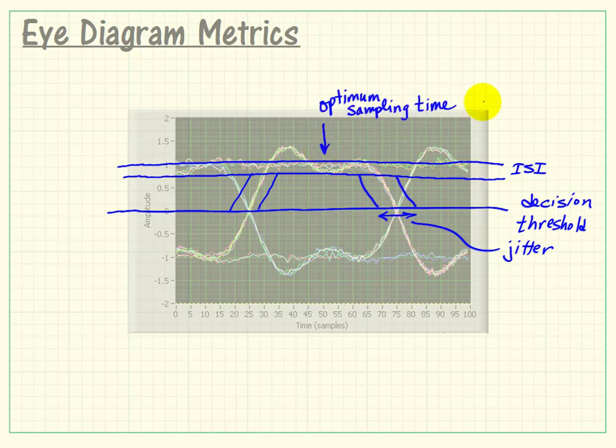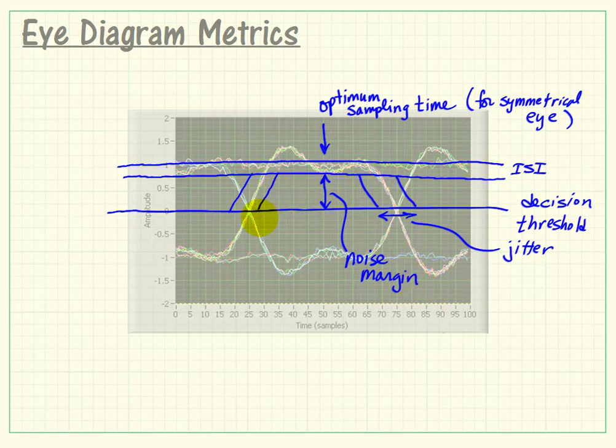Now, if our optimum sampling point happens to be in the center of the eye pattern, which is true for a symmetrical eye pattern, this particular example I'm looking at is not quite symmetrical. Then the distance from our zero decision threshold to that upper boundary is our noise margin.